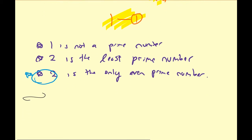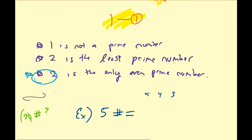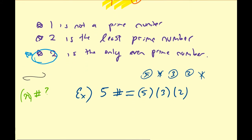Let's get back to the question: what is a primorial? Let's take an example. What is 5 primorial? The numbers less than or equal to 5 are 5, 4, 3, 2, and 1. We multiply together only those that are prime: 5 is prime, 4 is not, 3 is prime, 2 is prime, and 1 is not prime. So 5 primorial equals 5 times 3 times 2. That's 15 times 2, which is 30. So 5 primorial equals 30.